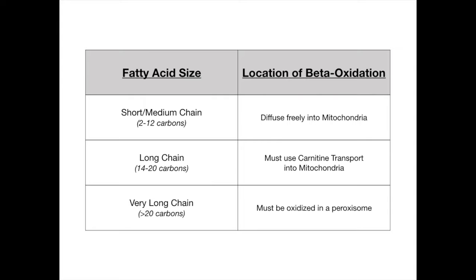The long chain group of 14 to 20 carbons is the highest yield of the three, and we'll spend the majority of this video on it, starting with the carnitine transport system. Before you can get to beta-oxidation itself, there's this slew of biochemistry that comes first, referred to as carnitine transport — it's the precursor to beta-oxidation of long chain fatty acids.